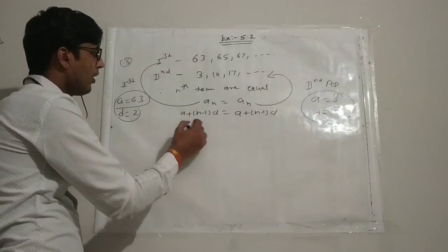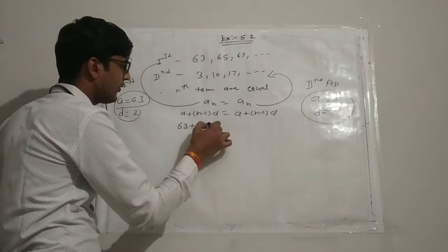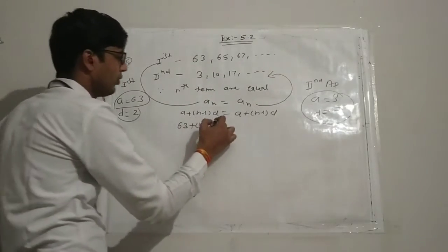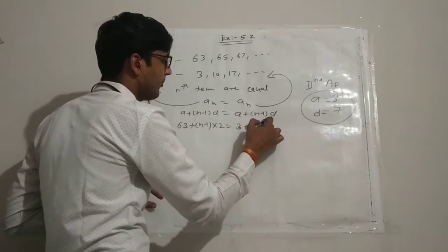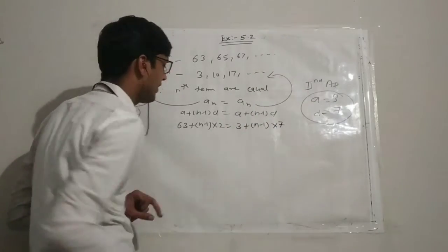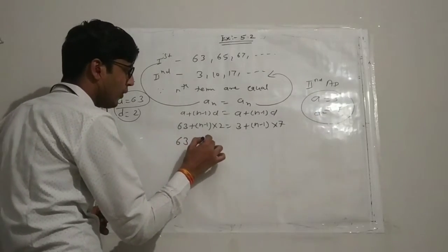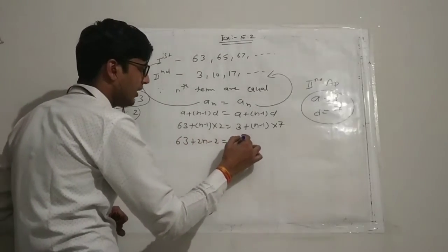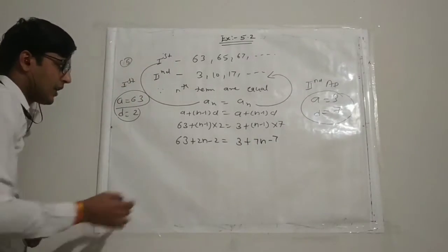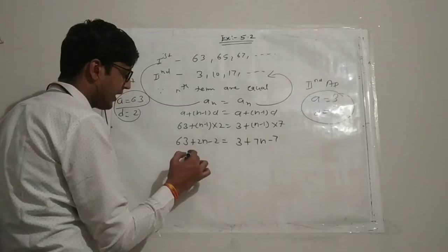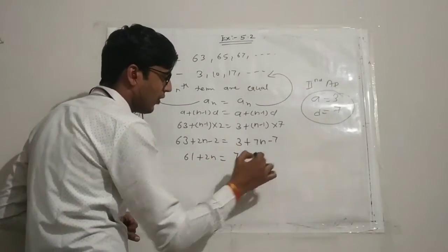Setting them equal: 63 plus (n minus 1) times 2 equals 3 plus (n minus 1) times 7. Simplifying: 63 plus 2n minus 2 equals 3 plus 7n minus 7, so 61 plus 2n equals 7n minus 4.